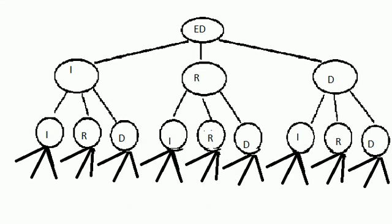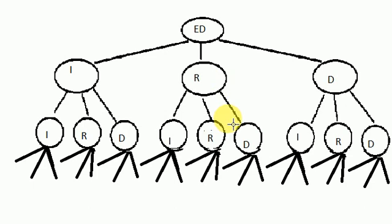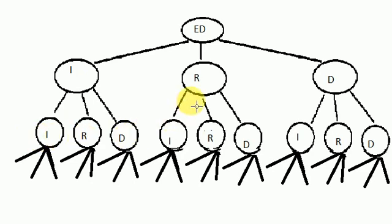If you think of the recursion tree for Edit Distance, it looks like this. We have to find the minimum number of operations to convert one string to another. At each state, we may apply insert, replace, or delete. Internally, after entering any of those states, the program again tries insert, replace, or delete for the resulting strings. For any state entered, it will try all three operations — this is what the recursion tree looks like.